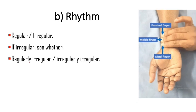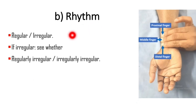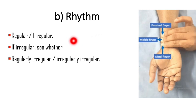Next, we are going to assess the rhythm of the pulse — whether it is regular or irregular in rhythm. A normal pulse will be regular in rhythm. If it is irregular in rhythm, see whether it is regularly irregular or irregularly irregular.